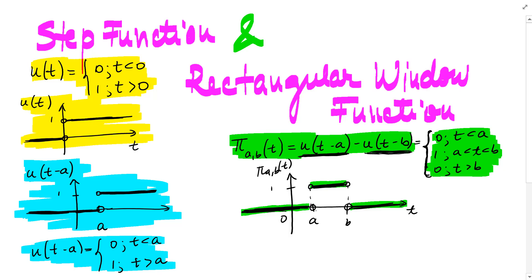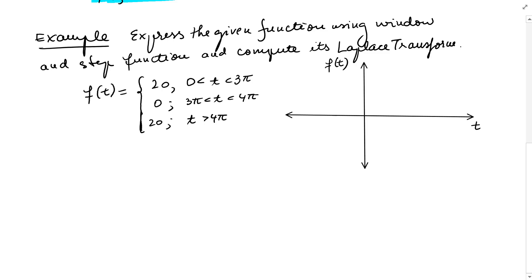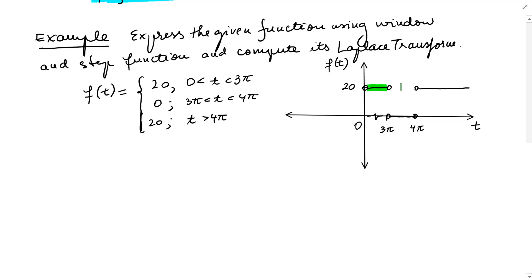Now, knowing all this information, let's solve this example: express the given function using window and step functions and compute its Laplace transform. f of t equals 20 for t between 0 and 3 pi, 0 for t between 3 pi and 4 pi, and 20 for t greater than 4 pi. Between 0 and 3 pi it's 20, then 0 between 3 pi and 4 pi, and 20 again from 4 pi on.